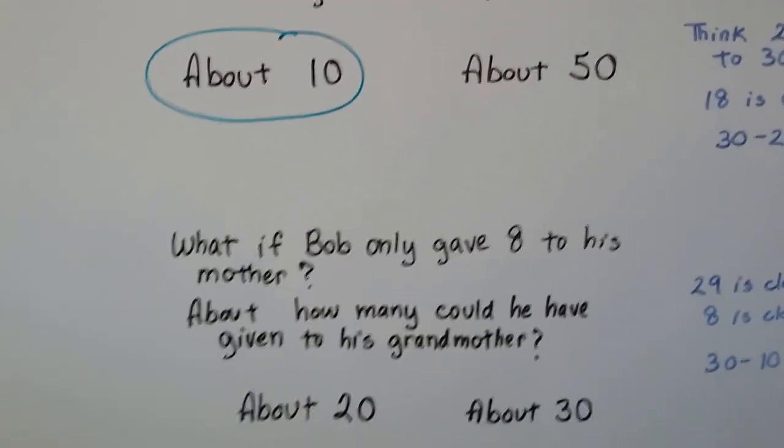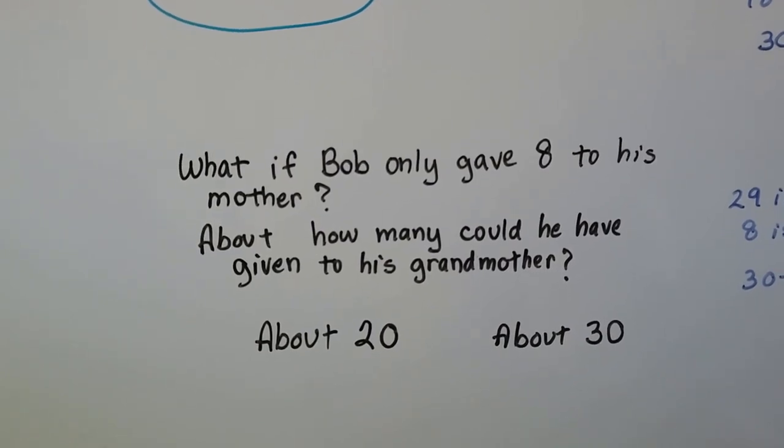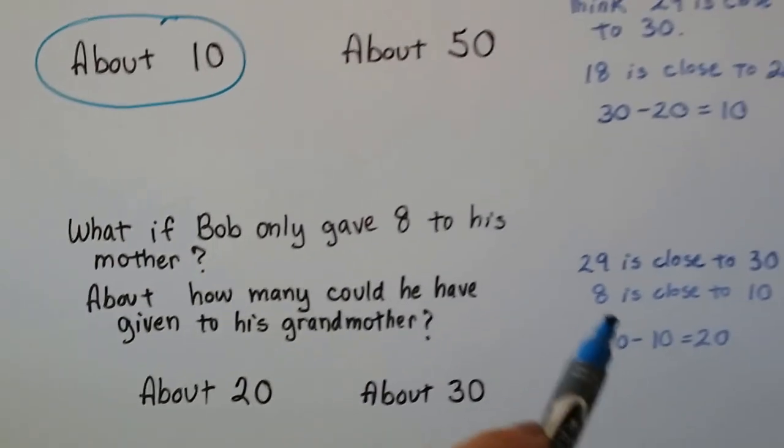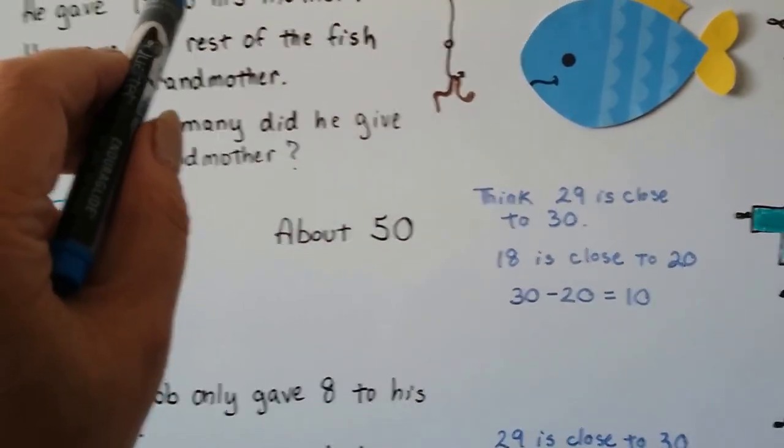Now, what if Bob only gave 8 to his mother? About how many could he have given to his grandmother? About 20 or about 30? Now remember, 29 is close to 30. That's how many he caught.